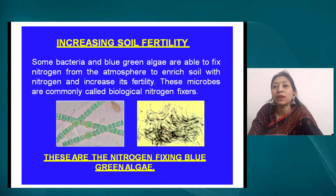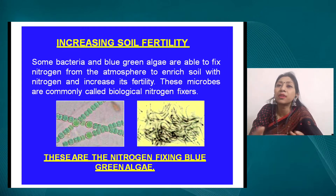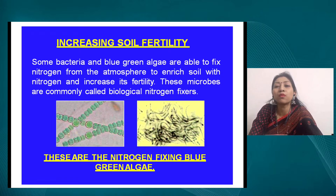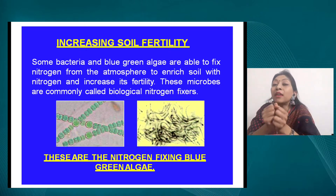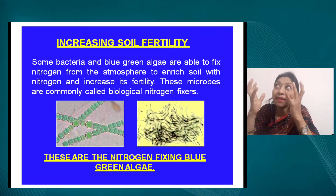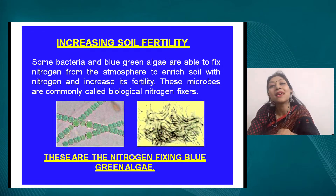How do you increase soil fertility? We add microorganisms to garden soil, parks, gardens, crops, and fields. These microbes are basically fixing nitrogen — they enrich the nitrogen present in the soil and take it from the atmosphere as well. That is how the fertility of the soil is increased.